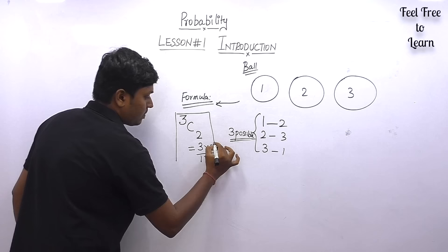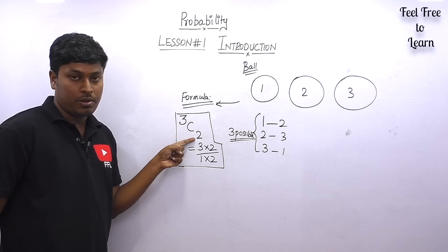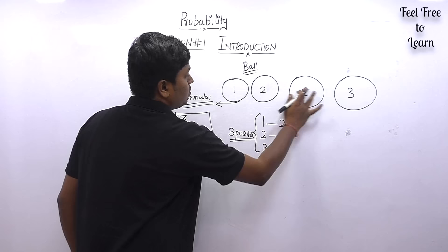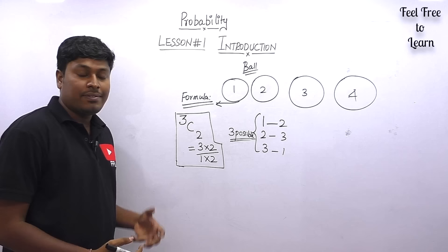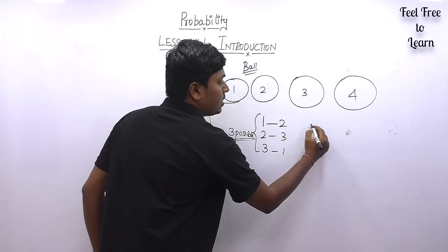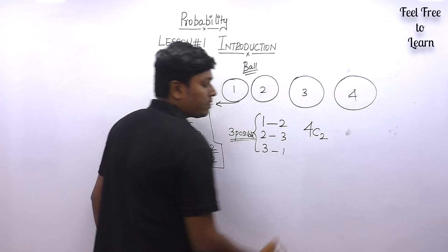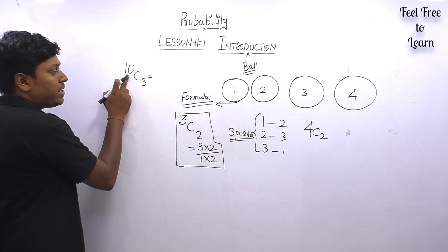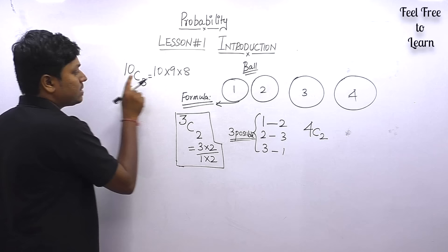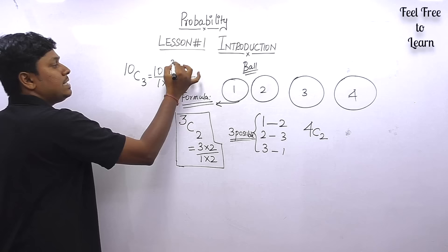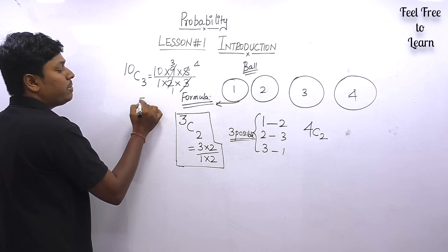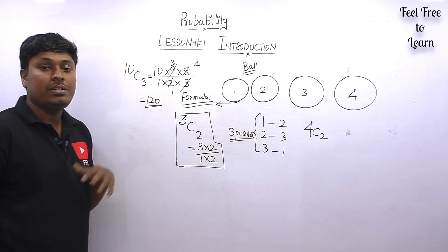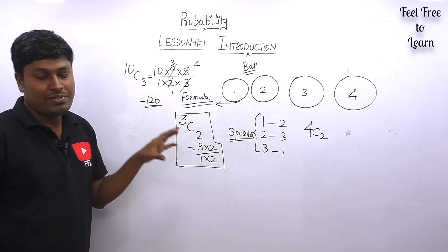If we have four balls and our target is to pick two balls, you can directly apply the formula: 4C2. If there are 10 balls and our target is to pick three balls, we write 10C3. This is calculated as 10 reduced three times — so 10 into 9 into 8, divided by 1 into 2 into 3. Simplifying gives 120 possible ways to pick three balls out of ten.